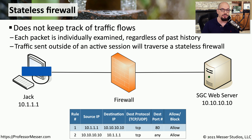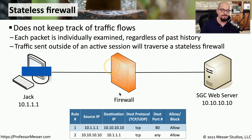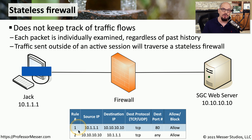All traffic going one direction through the firewall needs its own set of rules, and traffic coming the other direction needs a completely different set of rules. A stateless firewall is not able to determine that the response from a web server is being sent inbound because we originally made a request to that web server. This means the firewall is not going to keep track of any of these flows going back and forth, so it needs a rule base that covers all communication in both directions.